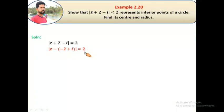So z minus z0 equal to r is the radius formula. Therefore, center equals (-2, 1) and radius r equals 2.